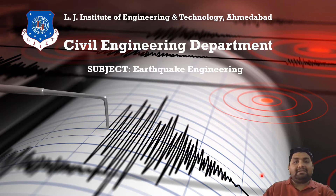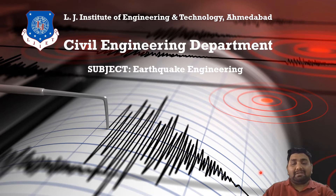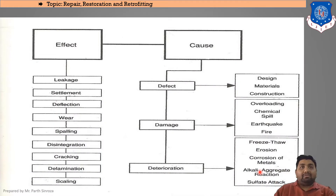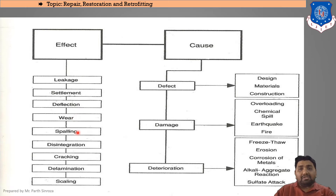Repairing generally means cracks and other defects are to be repaired. We'll be talking in detail about the methods for repairing and retrofitting. The reasons why repairing or retrofitting is needed include: leakage, settlement of supports, deflection of beams, columns wear and tear, spalling, disintegration of structural units, cracking, delamination, and scaling.